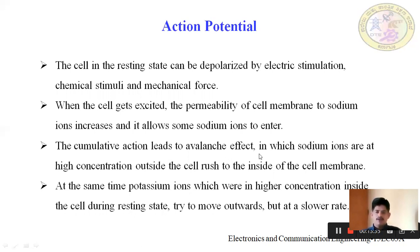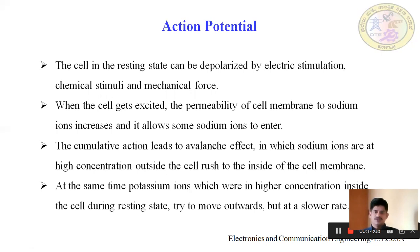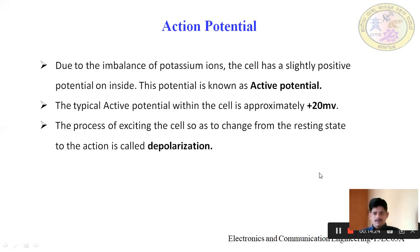The cumulative action leads to an avalanche effect in which sodium ions at higher concentration outside the cell rush to the inside of the cell membrane. Some sodium, due to changing membrane characteristics, starts entering inside. When it enters, the avalanche effect takes place — one pushes another, causing a heavy flow of sodium charges entering inside. At the same time, the potassium ions already present inside try to move outside, but at a very slow rate. Sodium is entering inside at higher speed and potassium inside is moving out at lower speed. In that condition there is a potential existing — due to this imbalance of potassium ions, the cell has a slightly positive potential on the inside. This potential is known as the active potential.